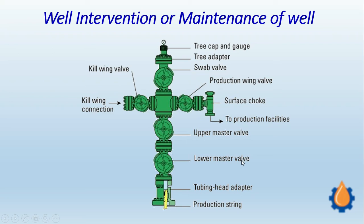There are two broad types of maintenance as far as well intervention is concerned. The first is mechanical maintenance, and the second is well maintenance. For mechanical maintenance, we can see that there are mechanical valves, seals, and instruments fitted on the production tree that periodically require maintenance to avoid leakage and for calibration of the instruments. Whatever activities we do for that purpose come under mechanical maintenance. Whereas due to continuous operation of the well, the formation pressure reduces as we go on exploiting the well fluid.